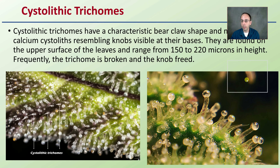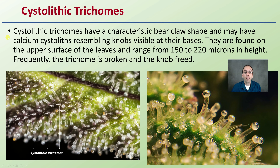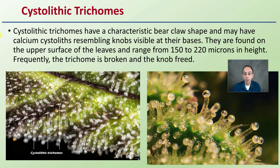First, the cystolith trichomes, which have a characteristic bear-claw shape and have calcium cystoliths resembling knobs visible at their base. They're found on the upper surface of the leaves and range from 150 to 220 microns in height. Frequently these trichomes are broken at the knob base. We can see three of them represented in the labeled diagram here.